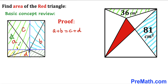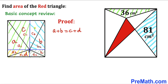Let me label the parts of each triangle: a sub 1 and a sub 2 for triangle a; b sub 1 and b sub 2 for triangle b; c sub 1 and c sub 2 for triangle c; and d sub 1 and d sub 2 for triangle d. In each rectangle, the diagonal splits it into two equal areas.